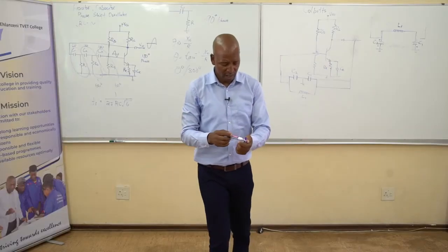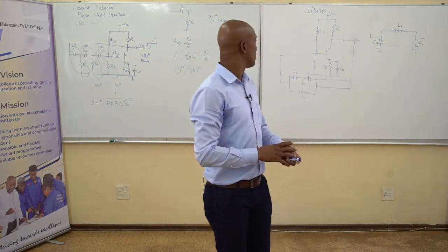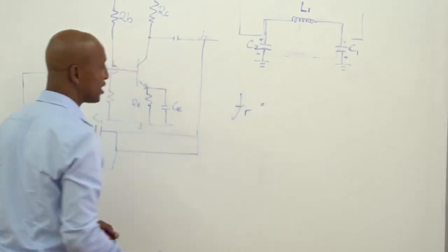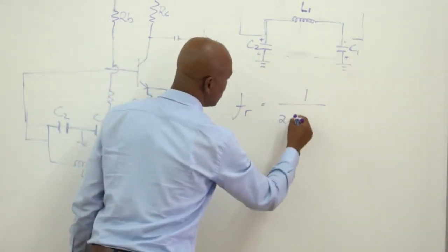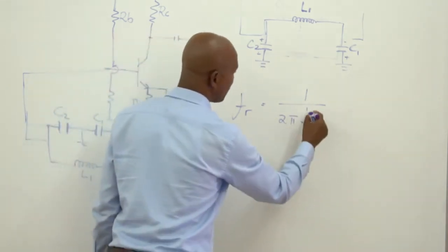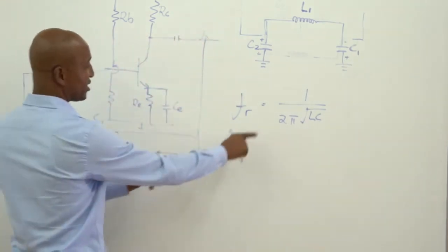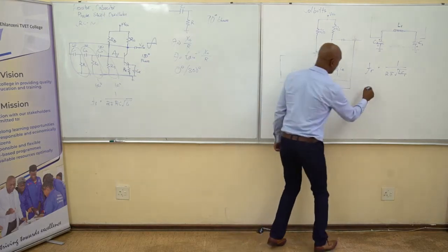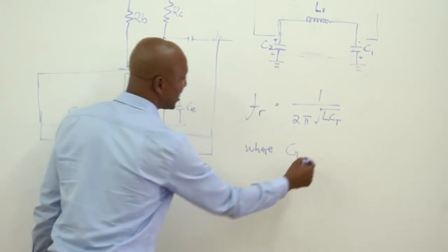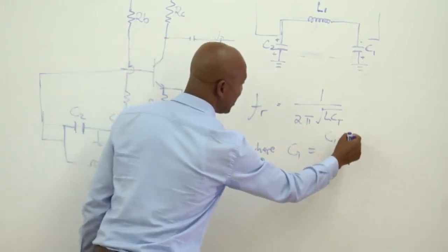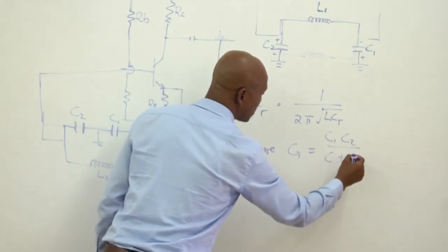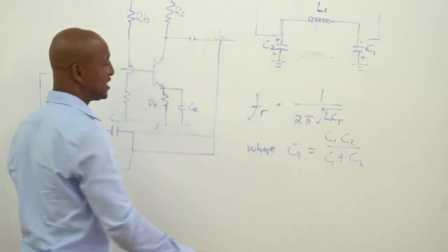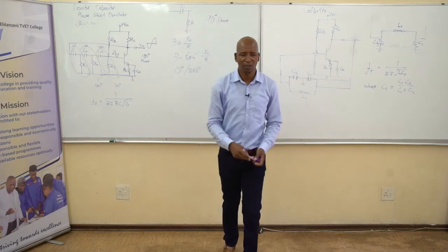That is how a Colpitts oscillator operates. For the frequency of oscillation in a Colpitts, the formula is: FR equals 1 over 2π times the square root of L·CT. Since the capacitors are connected in series, they are added as resistors in parallel — it is a product-over-sum. You find your total capacitance CT, and that allows you to determine the frequency of oscillation.